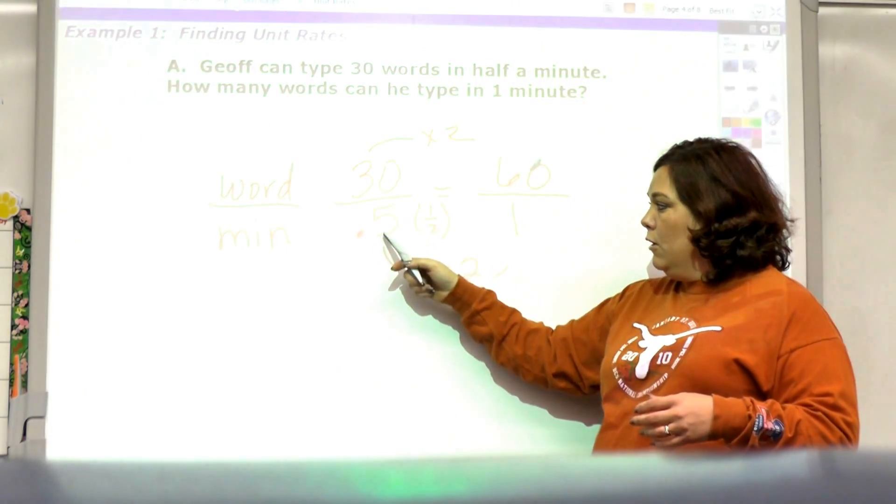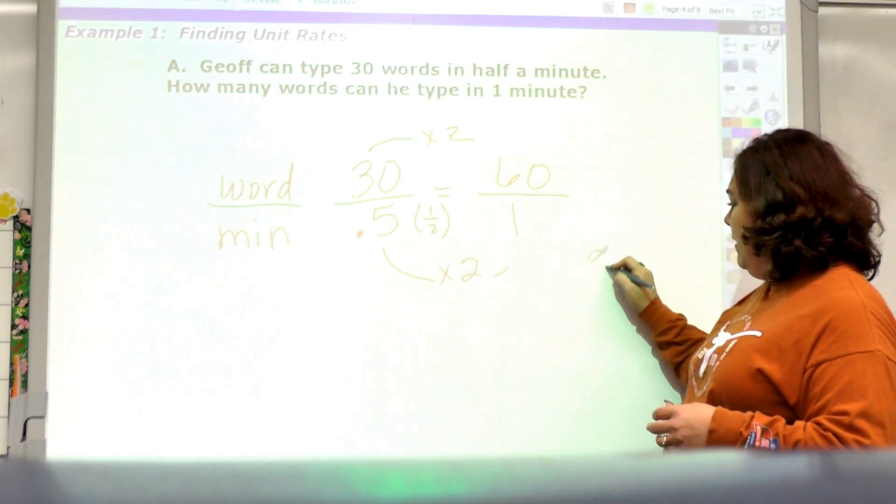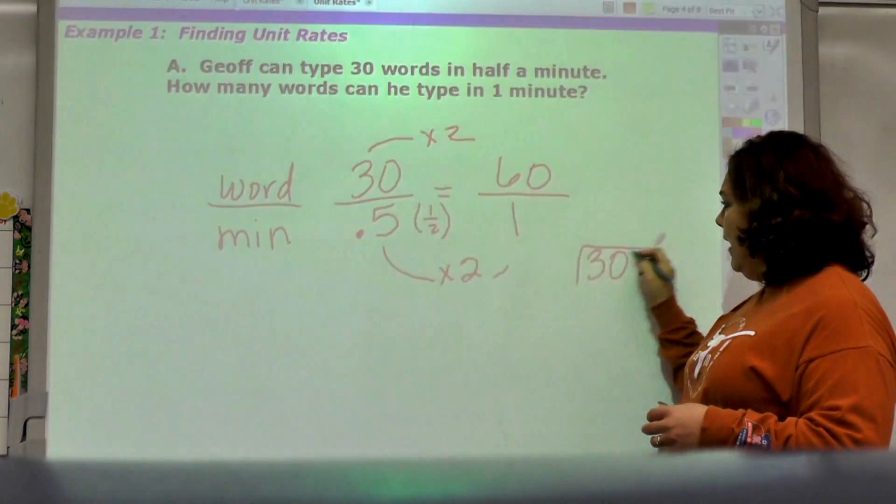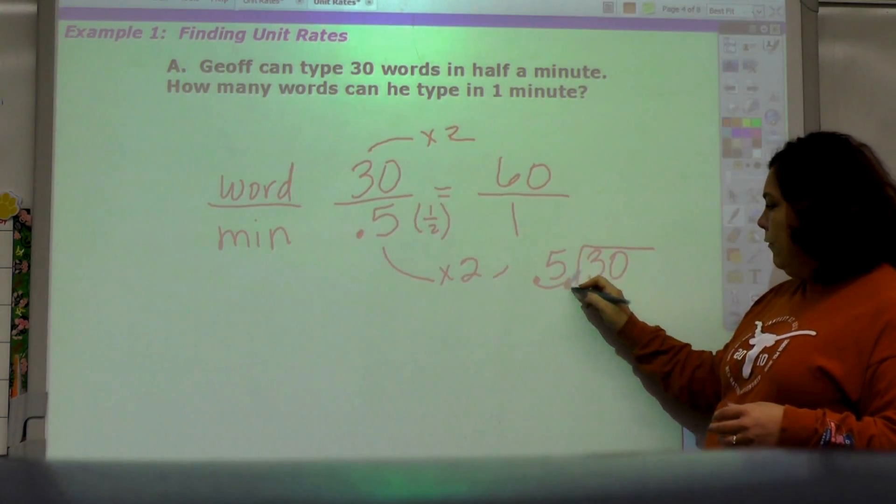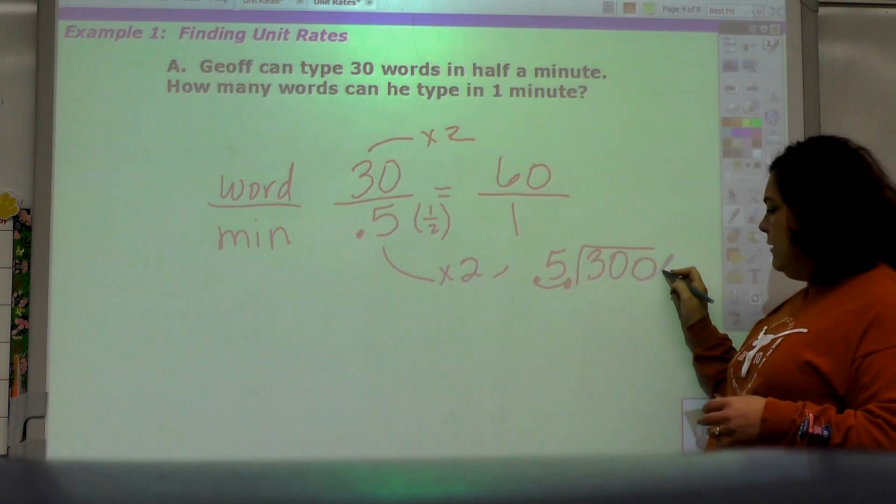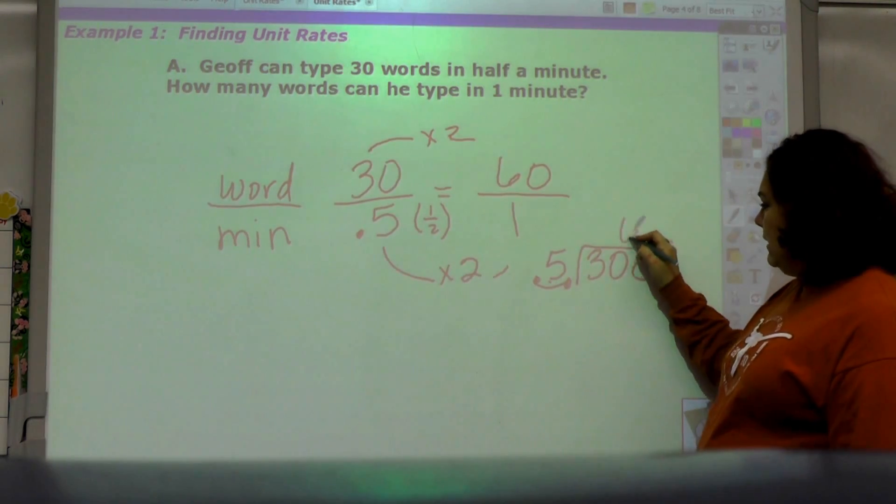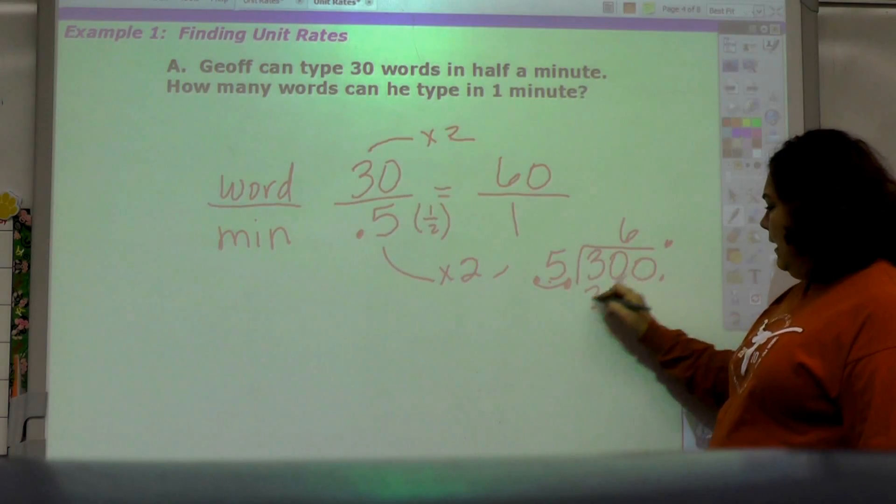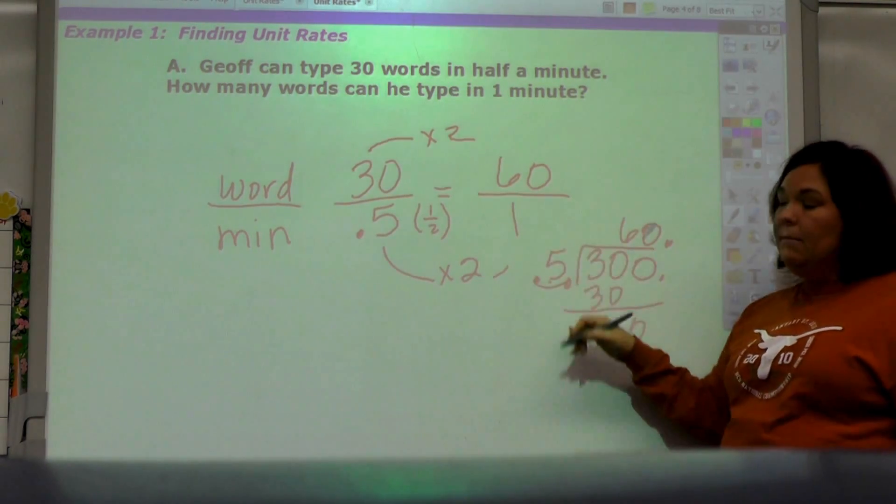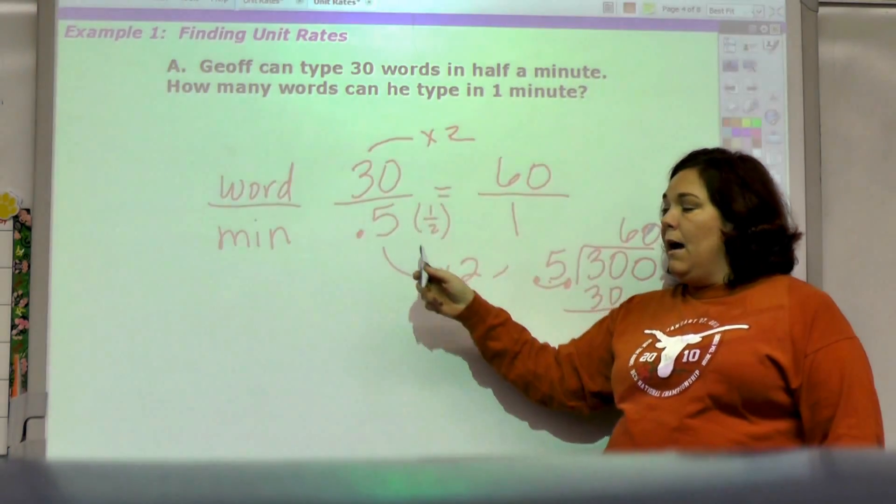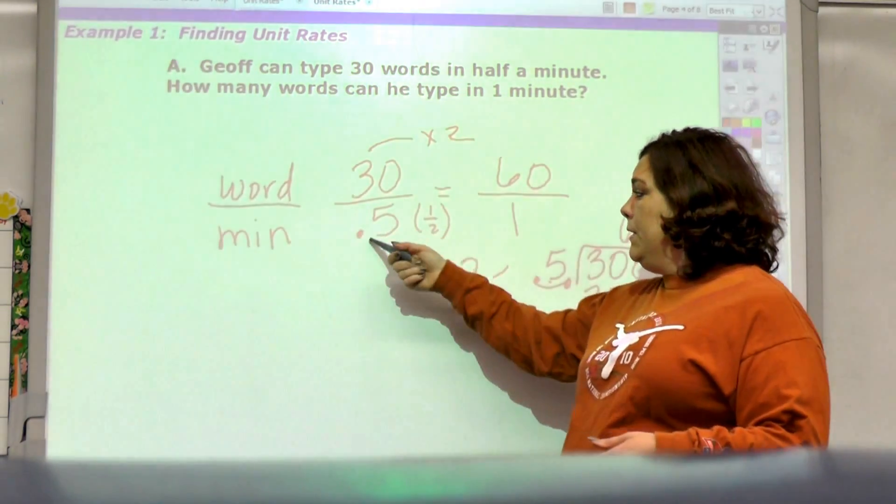If you have less than one or less than a whole number, more than one, you have to multiply. But if I divided 30 divided by 0.5, my decimal place would come over one and I would add a zero, bring it up, and 5 goes into 30 six times, bring down the zero, 5 goes into 0 zero times. So I get the same answer again if I divide.